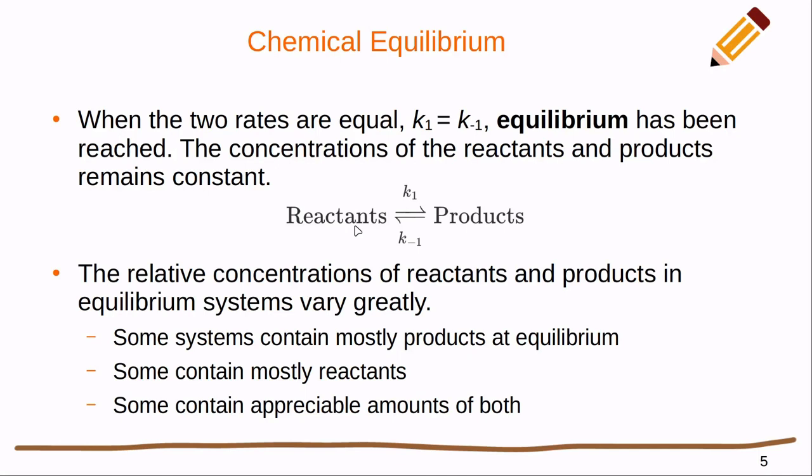Even though we still always have conversion between the reactants and products, they're happening at the same speed, and therefore the net amount of reactants and products remains the same.